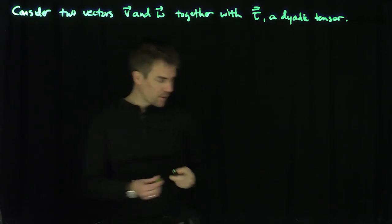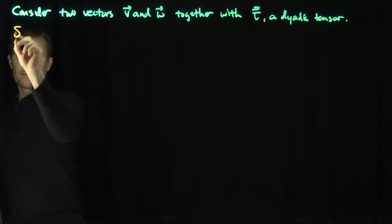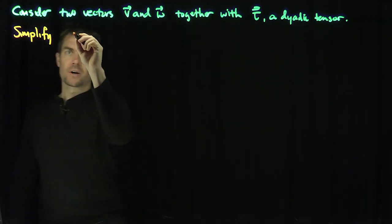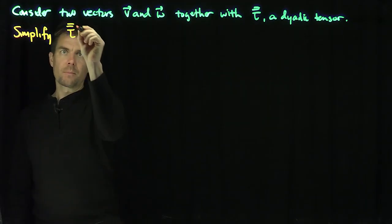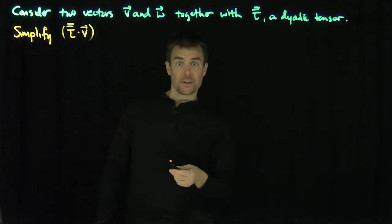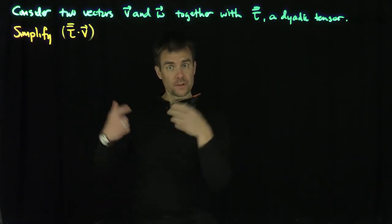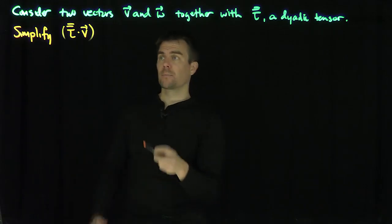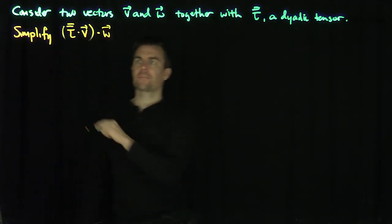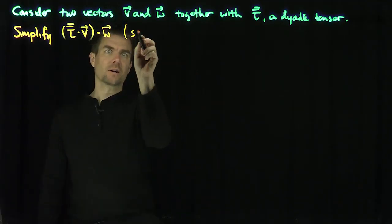The first objective is to simplify the expression tau-bar-bar dot V. Now tau-bar-bar dot V is going to turn into a vector — a dyadic tensor dotted with a vector is a single contraction, so it contracts into a vector. We then dot that vector with W, and so this whole thing is going to be a scalar quantity.